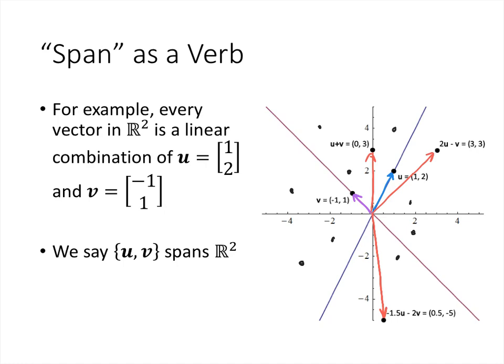And so in this case, as we said, we say that u and v span Rn, in this case R2. Or the set containing u and v spans R2, because everything in R2 can be written as one of those linear combinations.